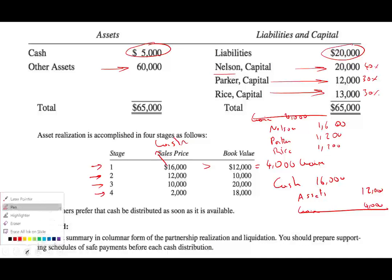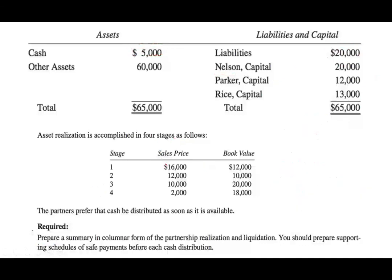For the second sale, they sold something for $12,000 with a book value of $10,000 — sold at a gain. For the third sale, they sold something for $10,000 with a book value of $20,000 — here they have a loss.